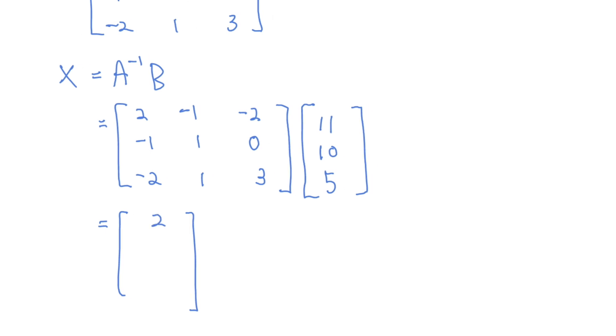Then don't forget the conclusion. So here x will be two, the value of y will be negative one, and the value of z is three. That's how you solve the system of linear equations for three unknowns. Do you understand everyone?